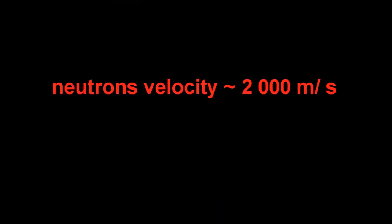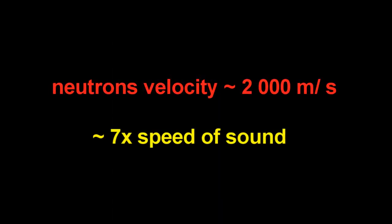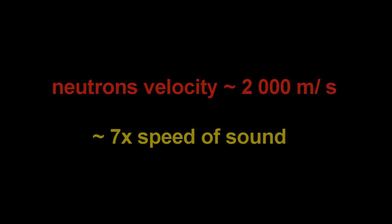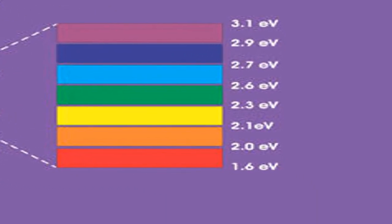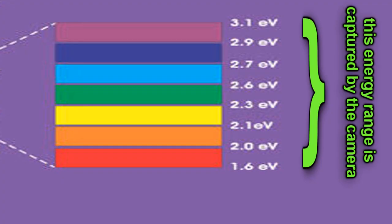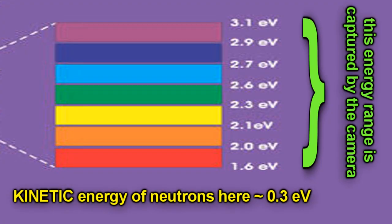They're only travelling about two kilometres per second, which is about, give or take, seven times the speed of sound. I mean, just to put this into perspective, cameras are sensitive to visible light, and visible light has energies in the range of one to four electron volts per photon. Now, the neutrons here only have about a third of an electron volt of kinetic energy per particle. That means that their kinetic energy is only about a tenth of that of a photon of visible light.